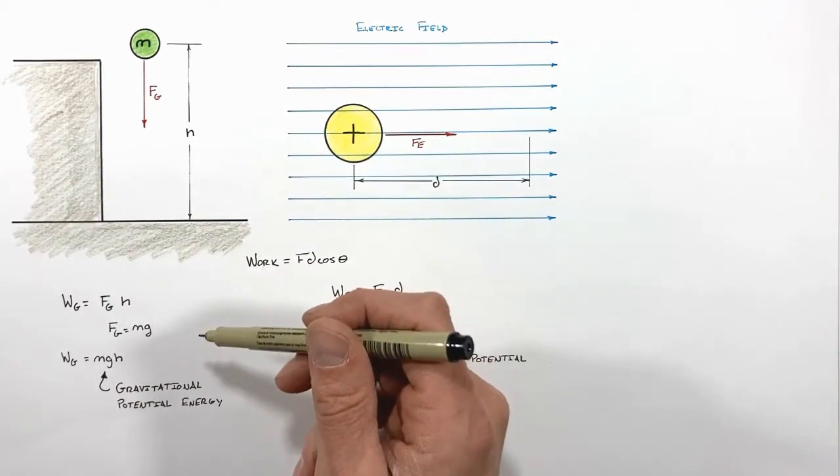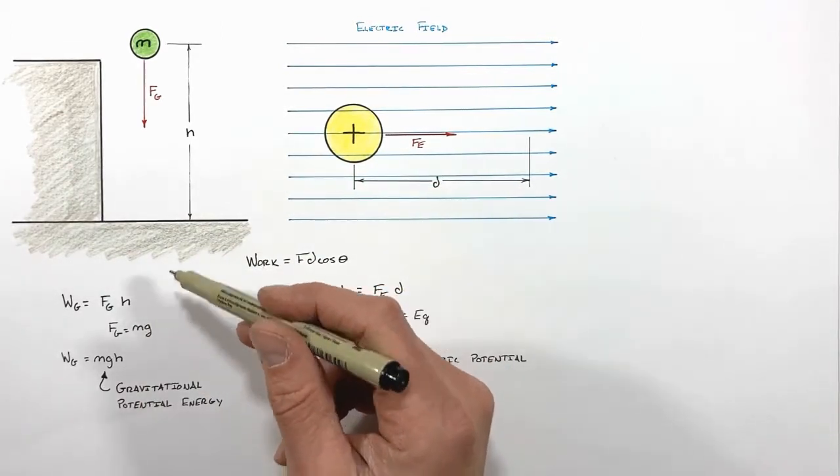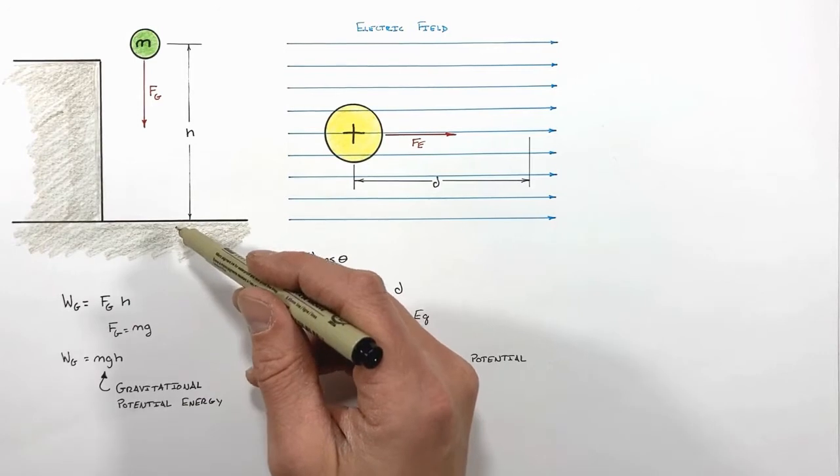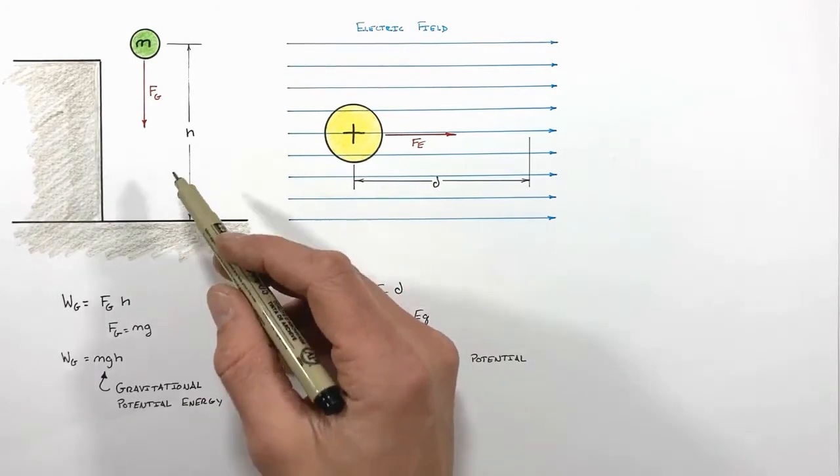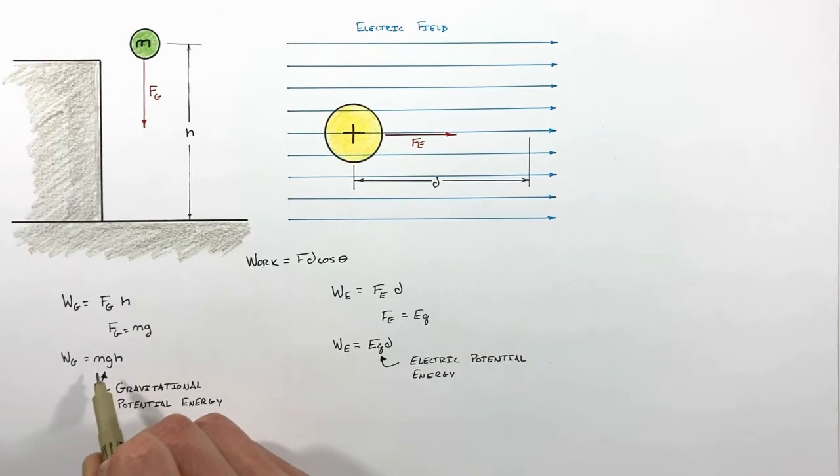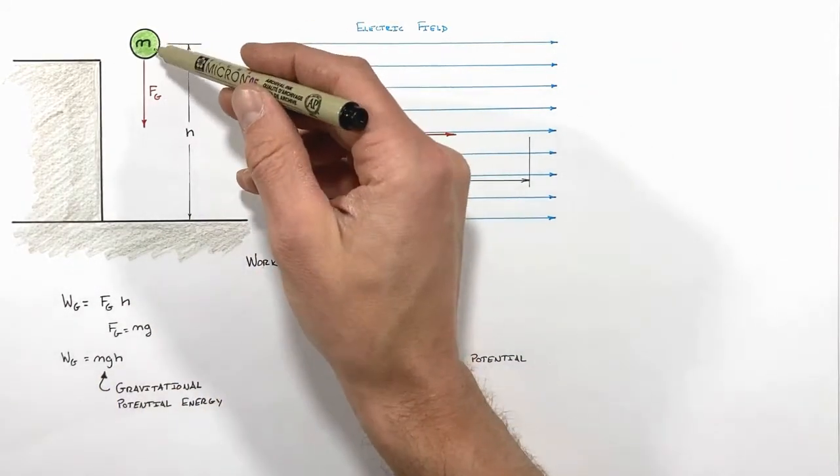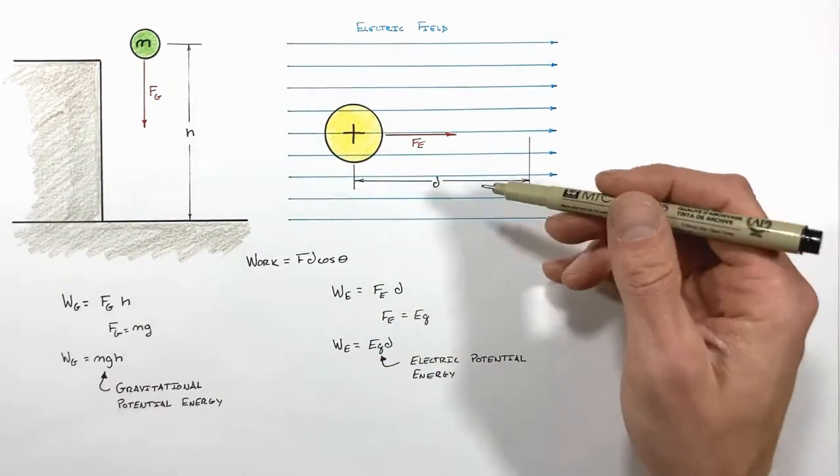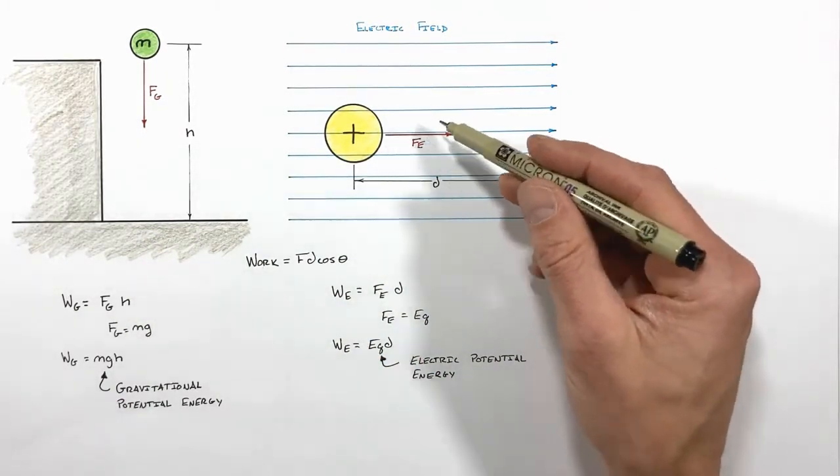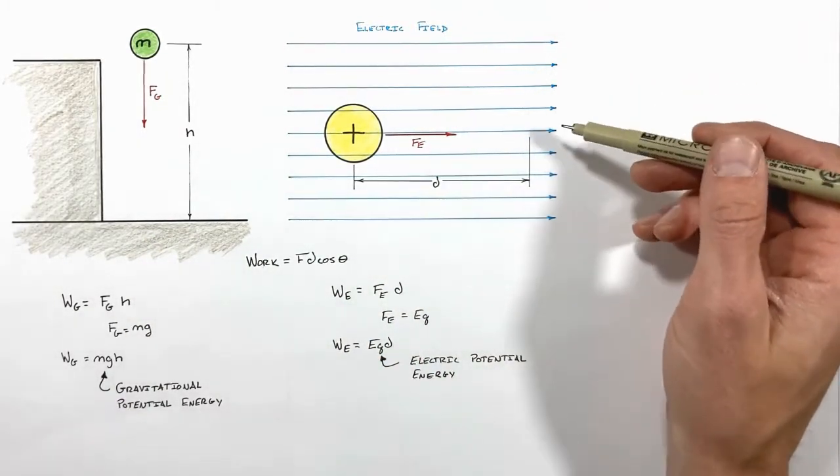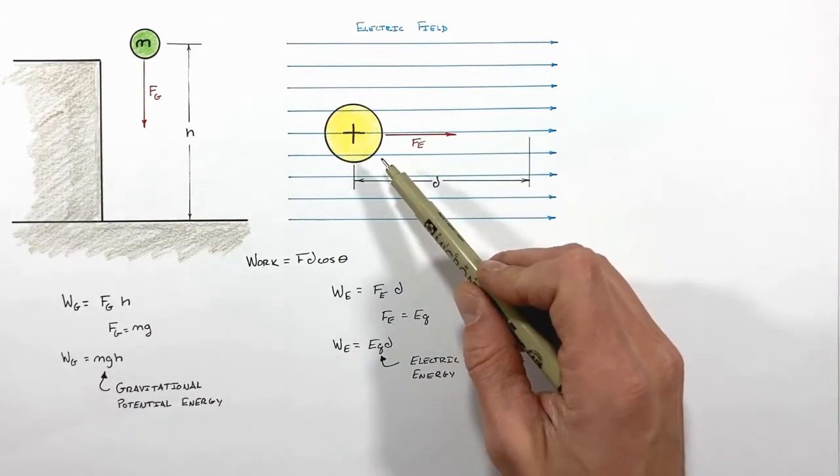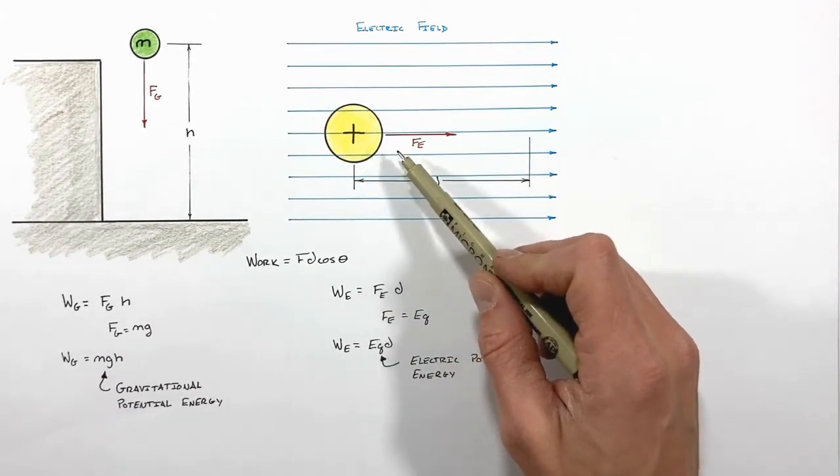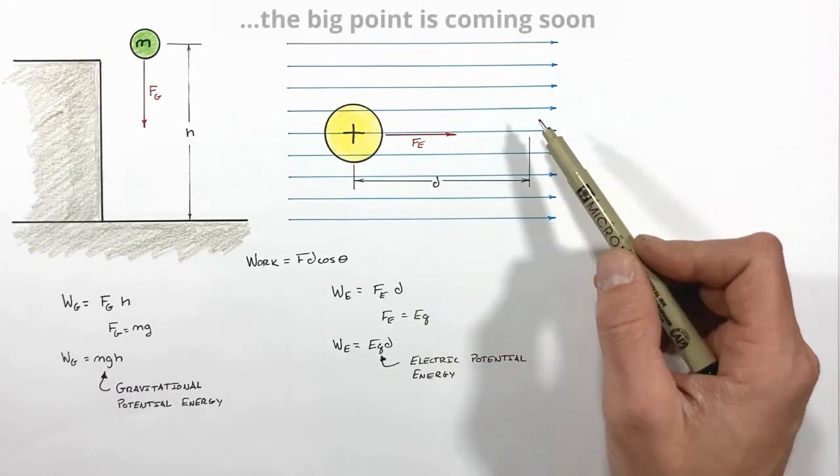So regardless of the mass of the ball, when this ball lands, the work by gravity will always be proportional to the mass of the ball. We can see that right here. So if we double the mass of the ball, then we're going to double the work done by gravity. Now back to our charge, the work done by the electric field is always proportional to the quantity of charge. If we double the amount of charge, then the work done on the charge will also double.